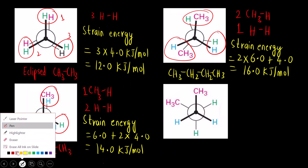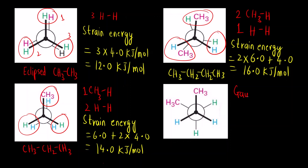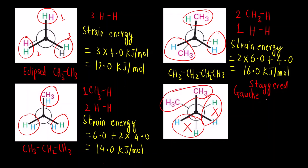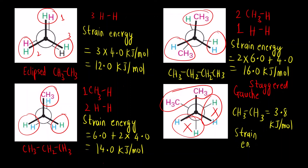The last molecule is the Gauche conformation (staggered conformation) of butane. There is no strain from H–H interactions; there is only strain from the CH3–CH3 Gauche interaction. The strain energy for CH3–CH3 in Gauche conformation is 3.8 kJ/mol, so the total strain energy is also 3.8 kJ/mol. That's it for today's video — we have learned how to calculate strain energy. In upcoming videos, we will cover terminologies like eclipsed, staggered, and Gauche conformations, new nomenclature, and conformational analysis. Thank you.